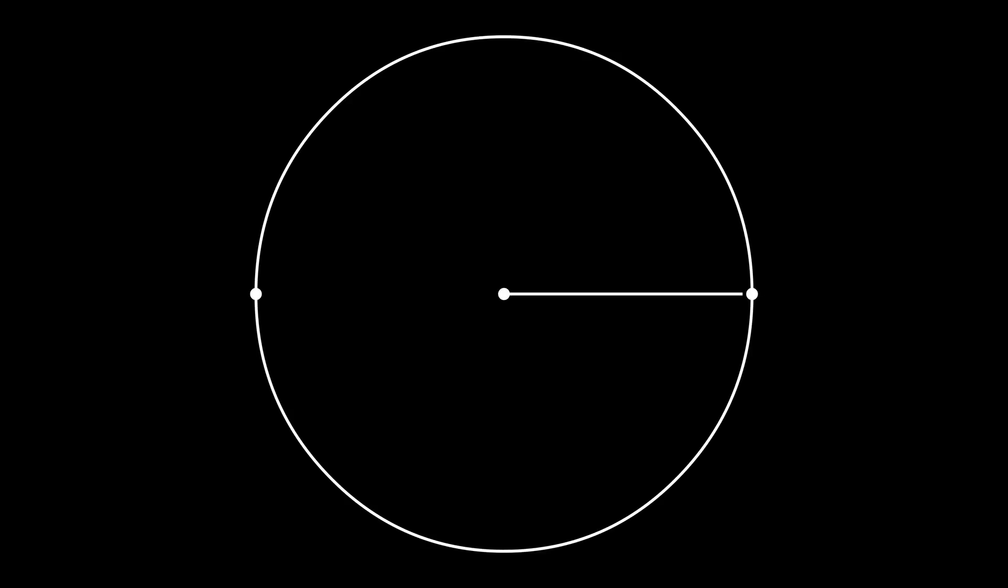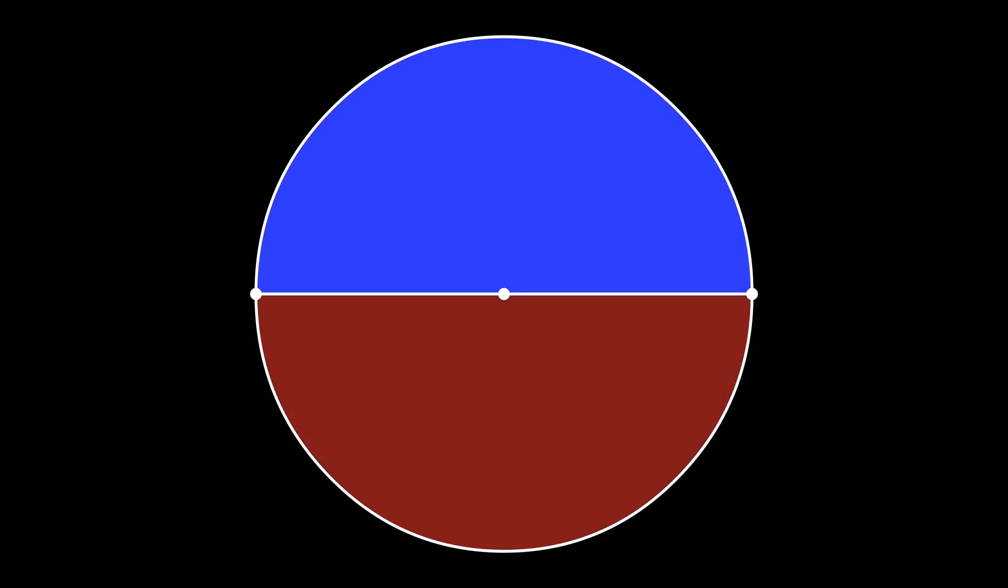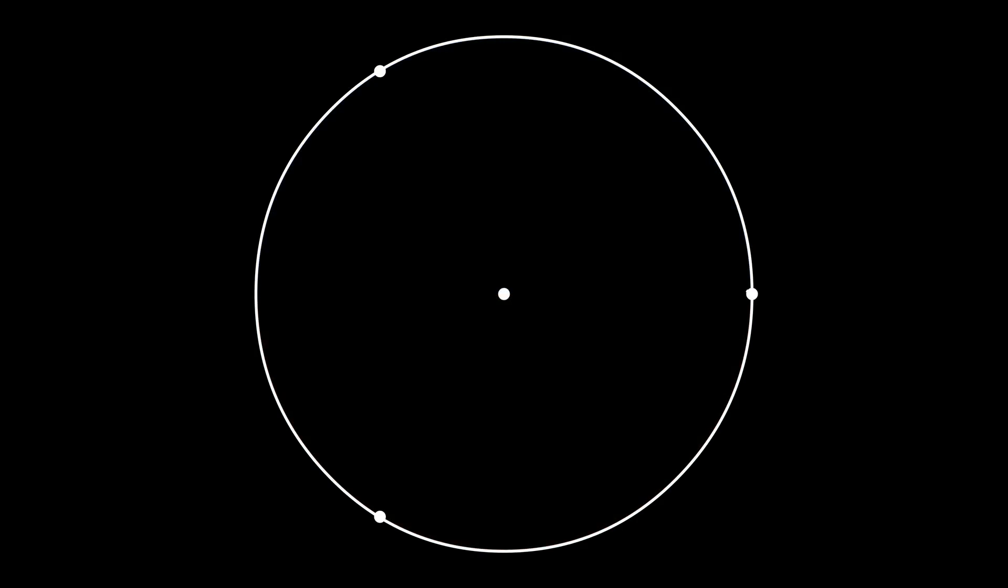We can construct two antipodal points on a circle, and that divides the circle into two pieces of equal area. We can construct an equilateral triangle on the circle, and that will allow us to divide the circle into three pieces of equal area.